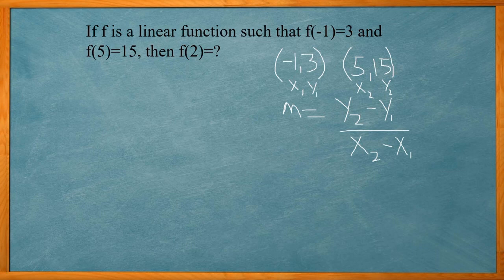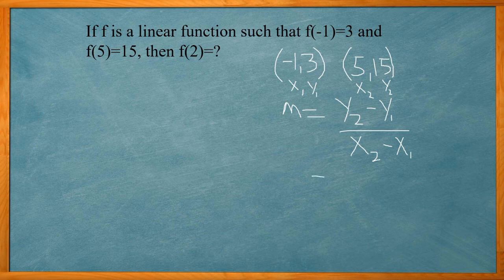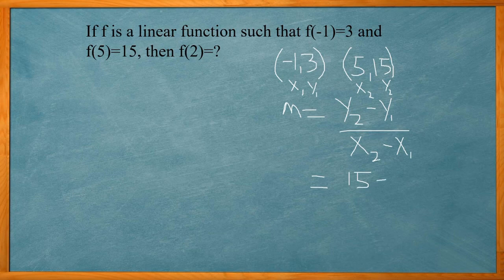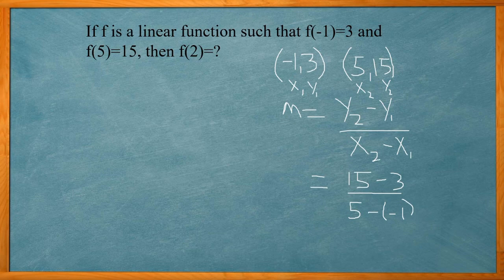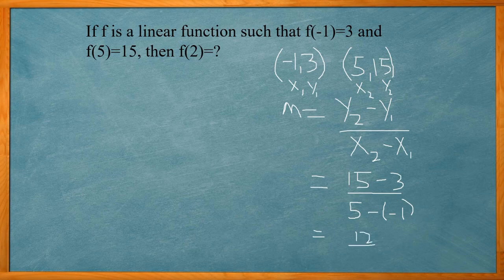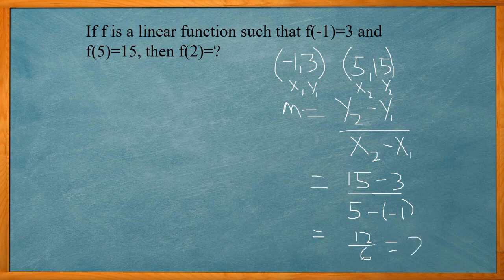So I'm going to plug that into my equation. So that's going to be 15 minus 3 over 5 minus a negative 1. That's going to give me 12 over 6, which reduces down to 2. So I have a slope of 2.